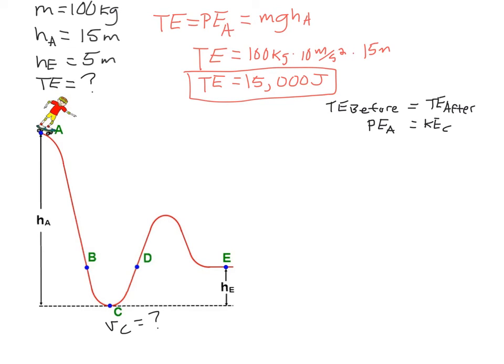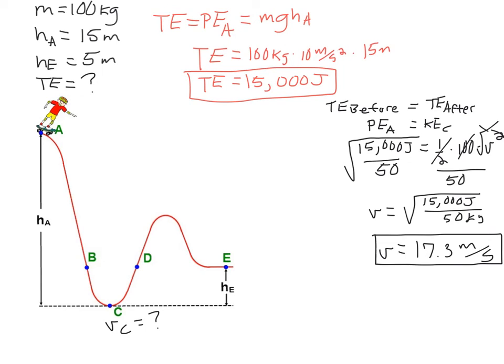So next I'm going to set up the total energy before being equal to the total energy after, and know that it's all in potential at point A and it's all in kinetic at point C, and since we already know the potential at A, that's 15,000 joules, we're going to set that equal to 1/2 mv squared and solve for v.